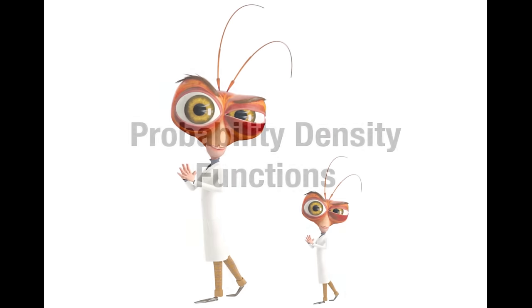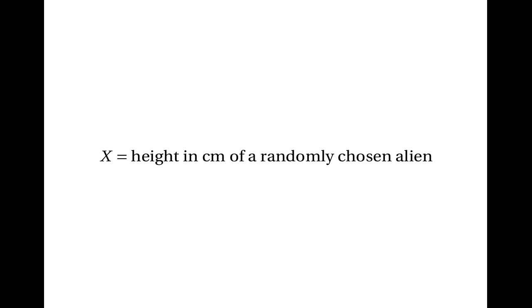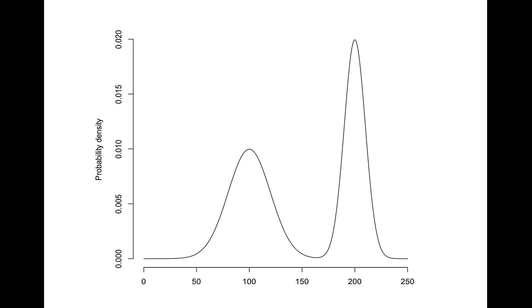Now this video is mainly about probability density functions, and the next thing I want to do is give you a sense of what these are. Suppose that we're on an alien planet, and just like here, the aliens have all different heights. Let x be the random variable equal to the height in centimetres of a randomly chosen alien. The probability density function for x gives us a sense of the different possible heights of the aliens and the relative likelihood of the heights.